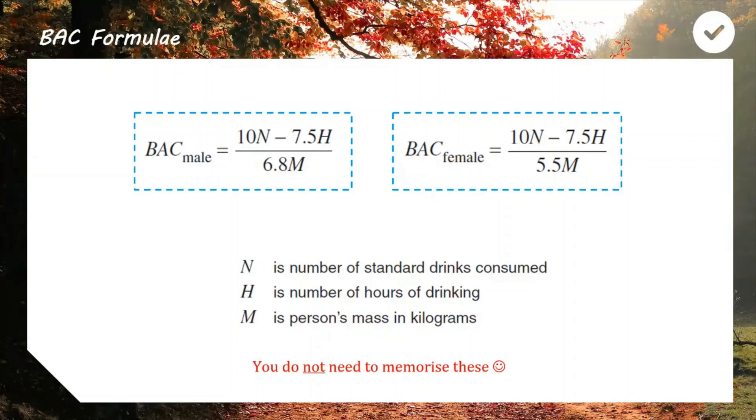You do not need to memorize these formulas. They used to be on the formula sheet, now they're not. But if we are asking you to do a question using one of these, we will give you the formula. You'll just need to know what the N, H, and M stand for - number of drinks, hours, and mass. Keep in mind, this is not an exact calculation. Everyone's body is different. These formulae just give you an estimation, so they're pretty close, but it's not exact science.